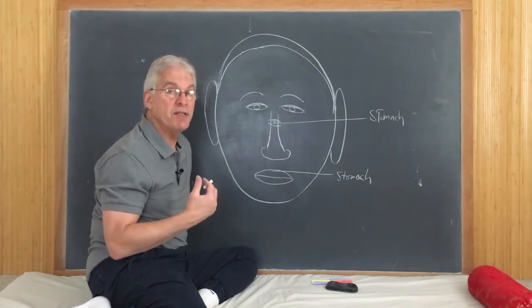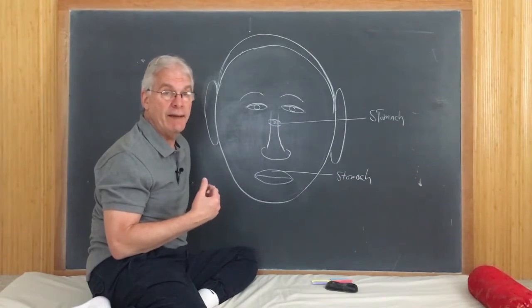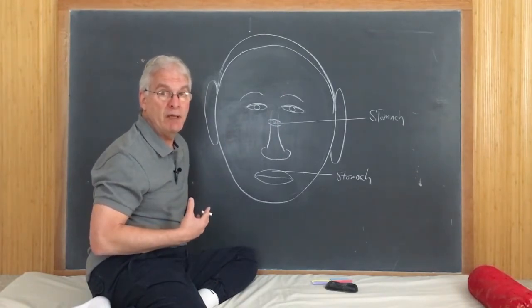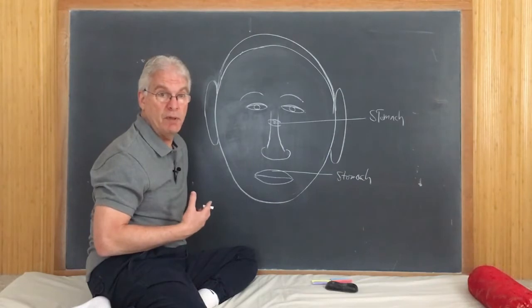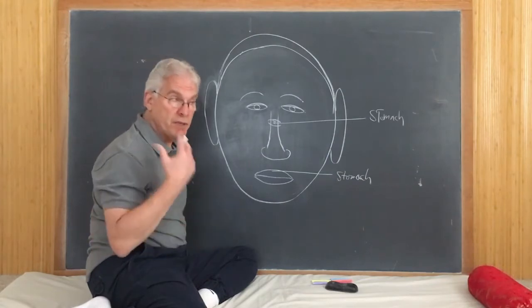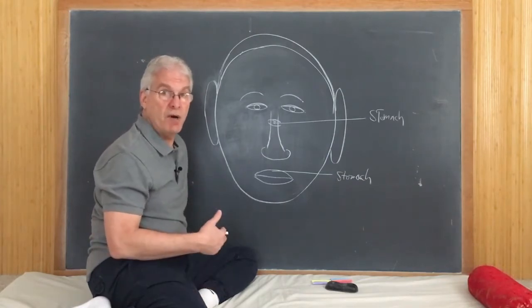Sometimes we'll notice that the left side is very different than the right side. And that one side of the stomach may be more the problem, the upper, the lower. And this can help us understand the cause of the problem as well.